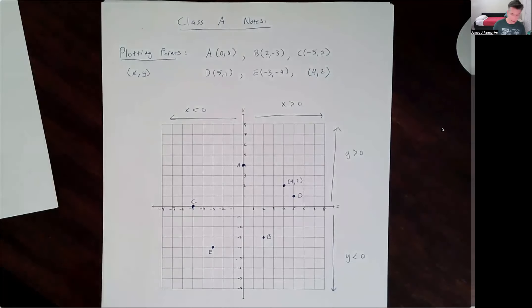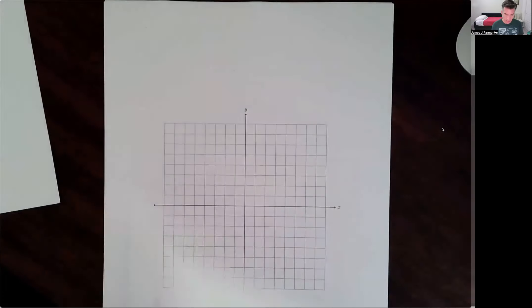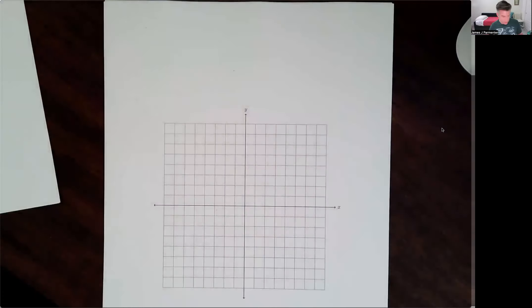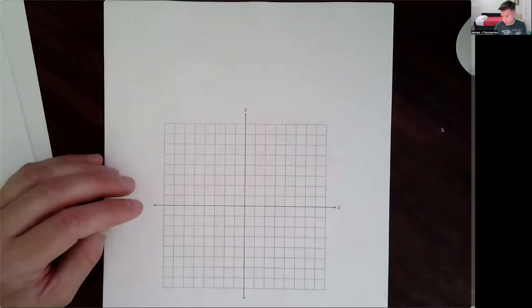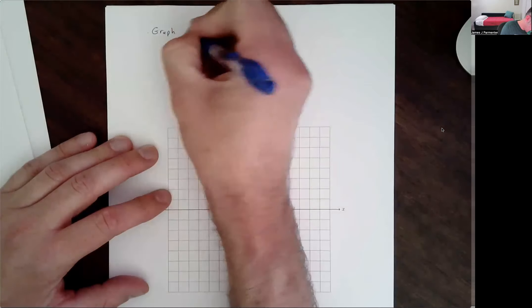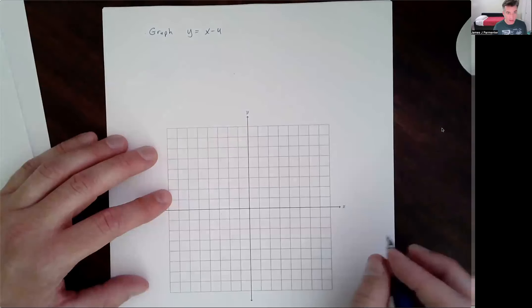Let's move on to the other part — graphing lines by finding intercepts. So let's look at some examples. Let's say we want to graph the following line: y equals x minus 4. And the first step is going to be to find the intercepts.